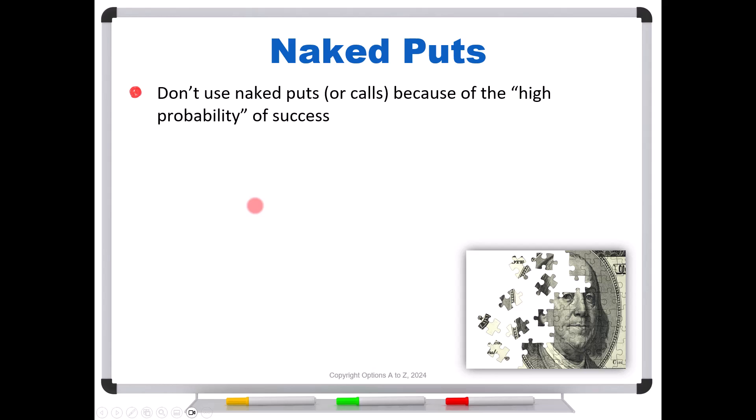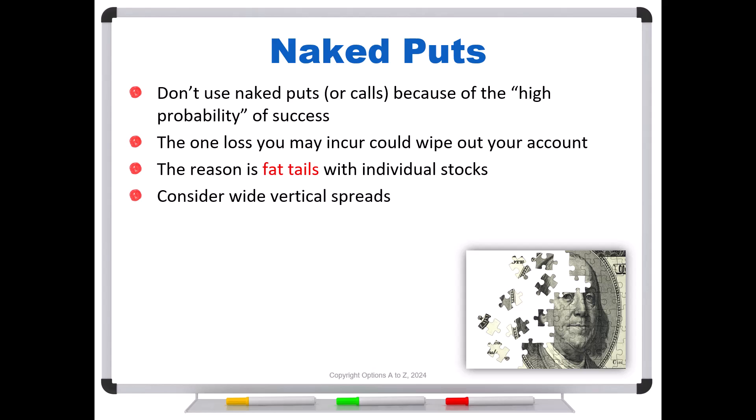So when you have naked puts, the thing to remember, don't use naked puts or naked calls for that matter because of the high probability of success that you might see from your broker's platform or by looking at a normal distribution. The one loss you may incur could wipe out your account. And the reason is fat tails with individual stocks. So what's one way to counter this? Well, fairly simple strategy would be to consider wide vertical spreads. Instead of selling the $100 put, sell the $100 put and buy the $95. Sell the $100 and buy the $90. Buy the $80. But buy something just so you can define that risk. And if you do that, you'll be making better decisions, and that's what's going to give you better outcomes in the long run.